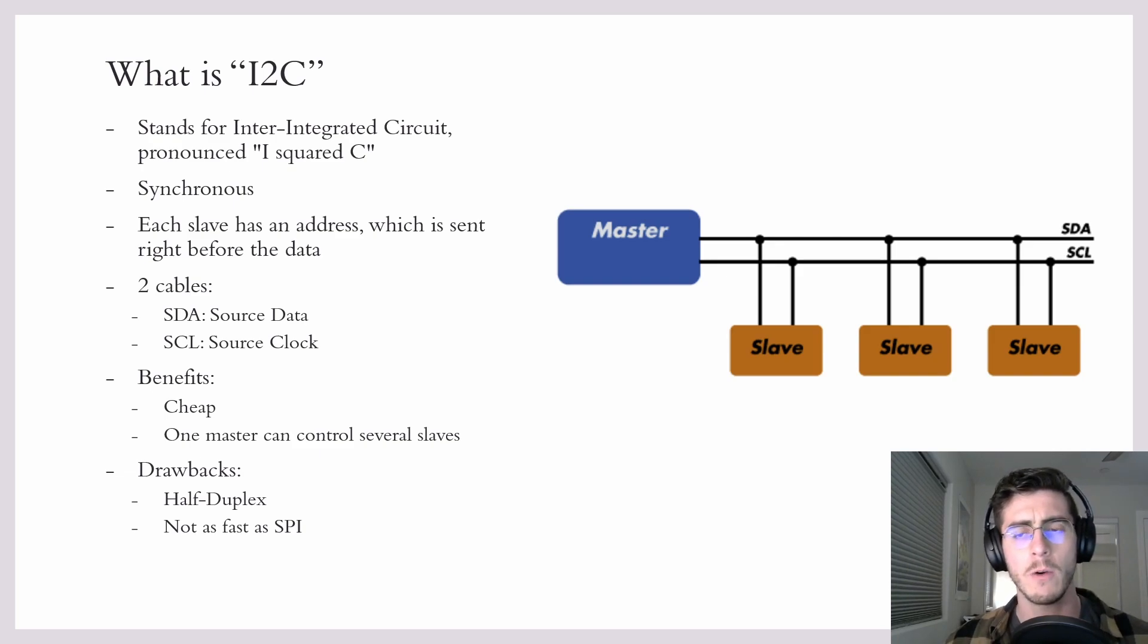So you might be wondering, well then how does each slave communicate with the master independently? The way it does that is the master will send the address of the slave device right before sending the data. So that tells all the devices, 'Hey, if you're not this address then don't listen to this. If you are this address then I'm talking to you.'